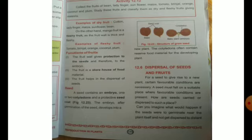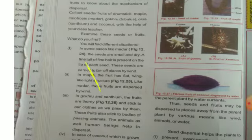Have you ever imagined that seeds are falling in the same place where the plant is growing? So let's study about seeds and see what mechanism allows them to be transported. You are asked to collect fruits of drumsticks, madar, gokhru, tribulus, and okra — with the help of your class teacher.